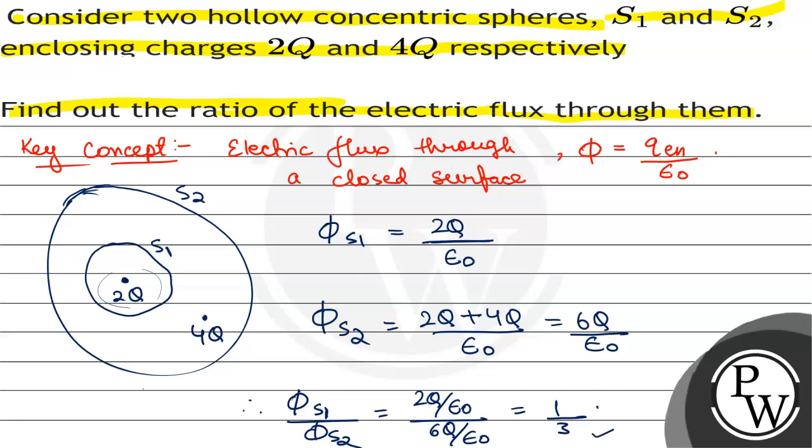So the ratio of electric flux through them will be equal to 1 by 3. Hope you all understood it well. Best of luck.